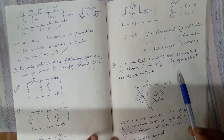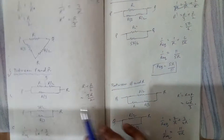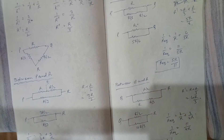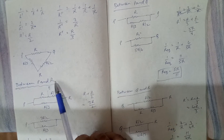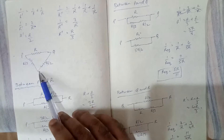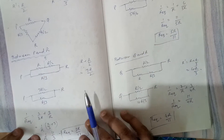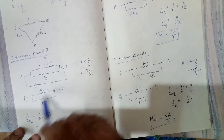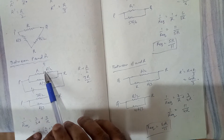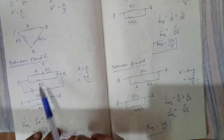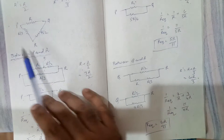When finding equivalent resistance between P and R, these two terminals are connected to the battery source. The branches between P and Q and between Q and R will be in series. We can assume this has been connected to an external battery, so P to Q is R and Q to R is R by two — this is the modified diagram when finding the equivalent resistance between P and R.